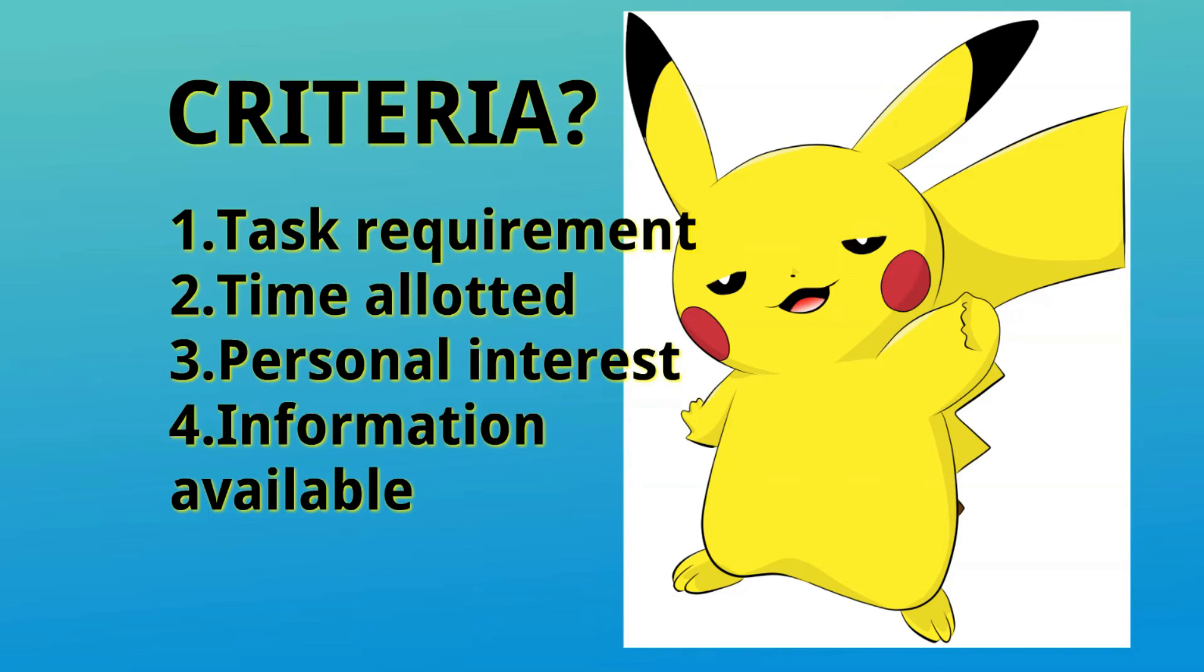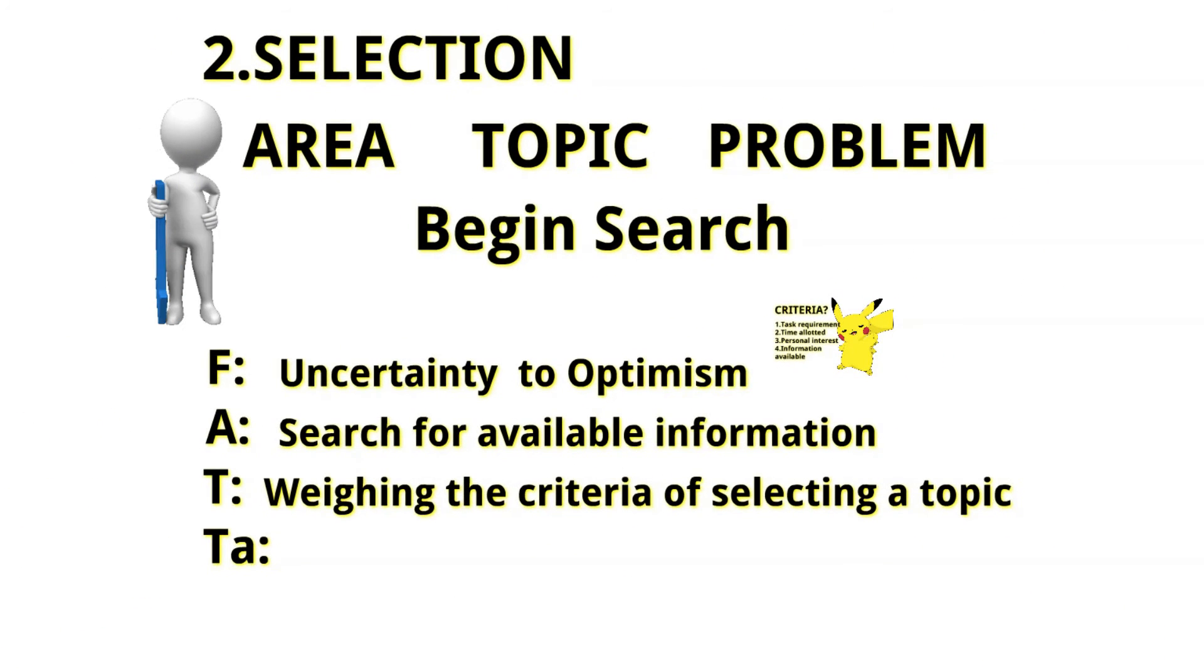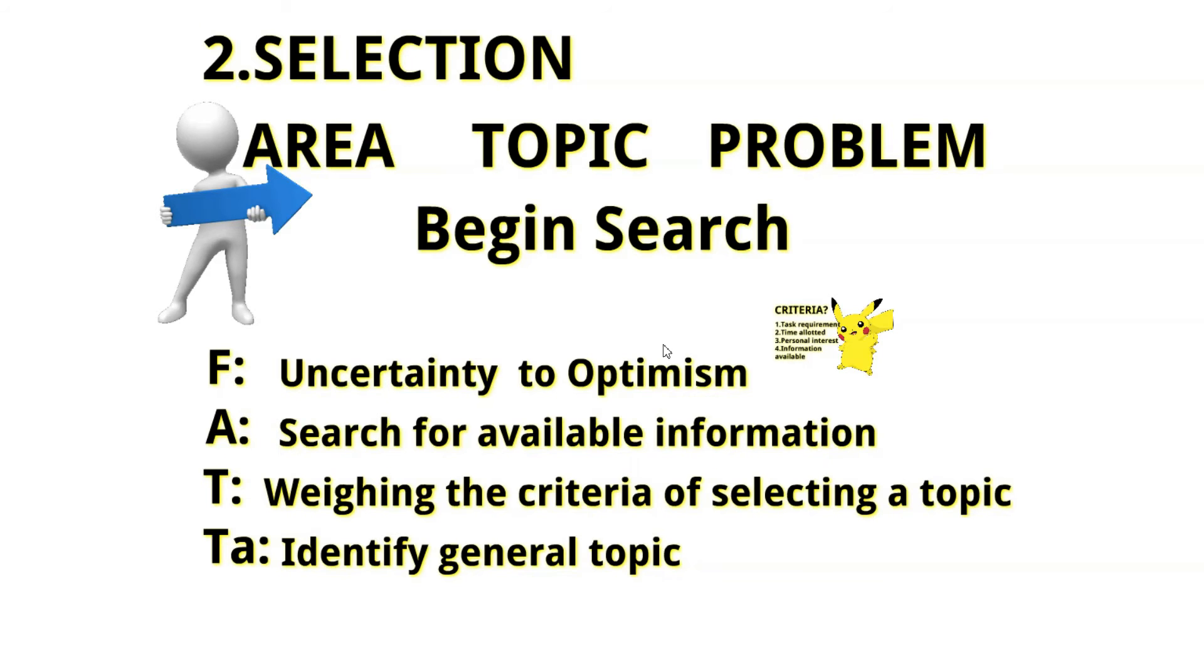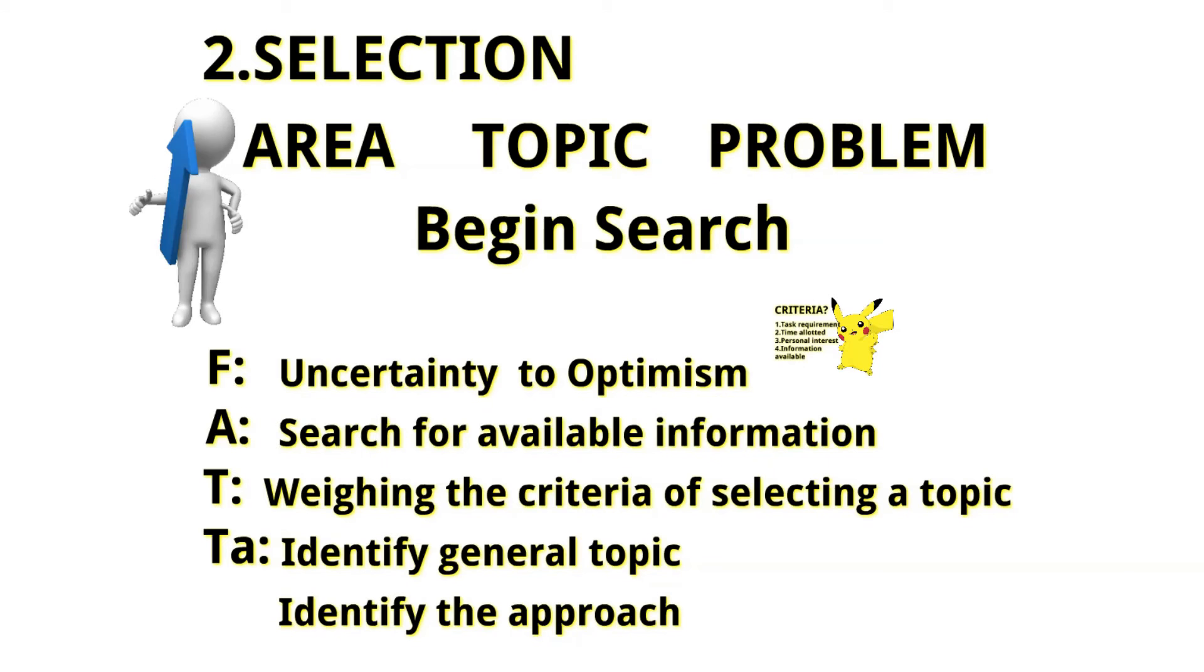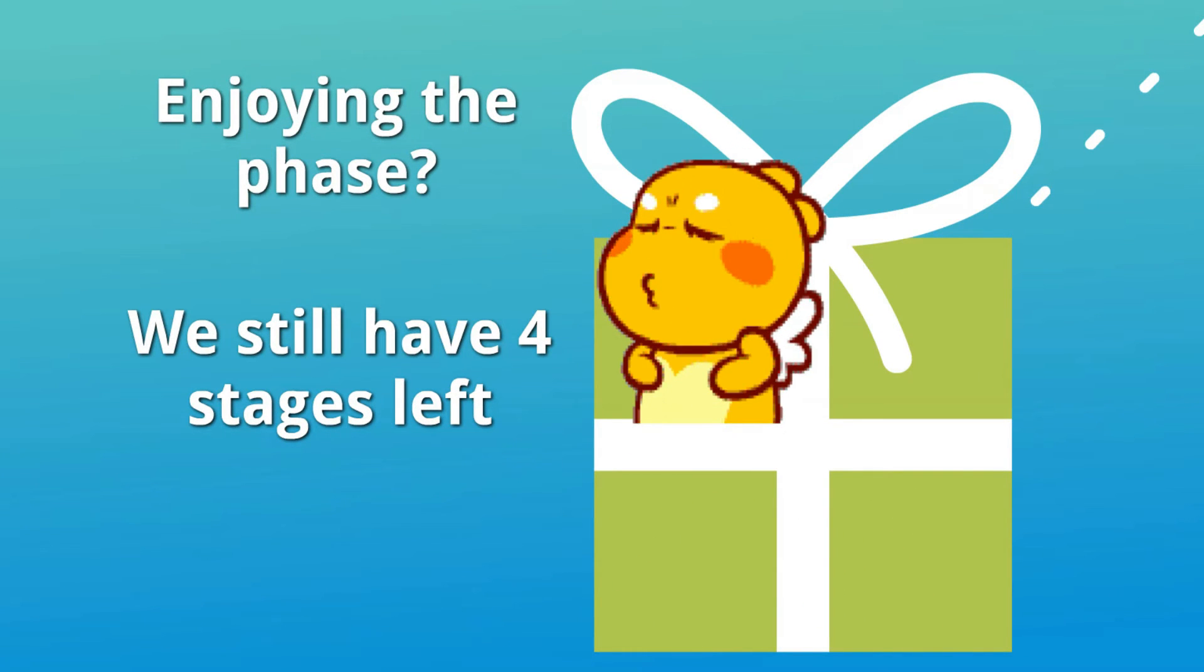Let us now have the task for your selection. The task for your selection would be to identify the topic or general topic and to identify the approach that you would be using. And that's it for your selection stage. Now the question is, are you enjoying the pace of our discussion? You still have four stages left.